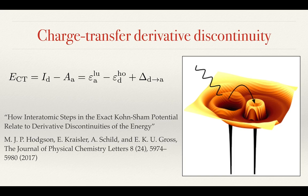The charge transfer derivative discontinuity is a crucial feature of the Kohn-Sham potential if one wishes to obtain an accurate charge transfer energy from Kohn-Sham theory. At present, common approximations to the Kohn-Sham potential do not capture these features owing to their non-local dependence on the density — i.e., the height of the step of the donor atom depends on the characteristics of the acceptor atom regardless of how separated the atoms are. For more information, please see my paper on the relationship between the steps in the exact Kohn-Sham potential and the derivative discontinuities in the energy.